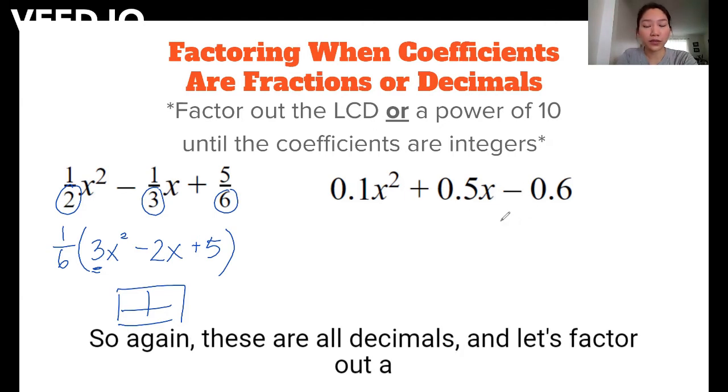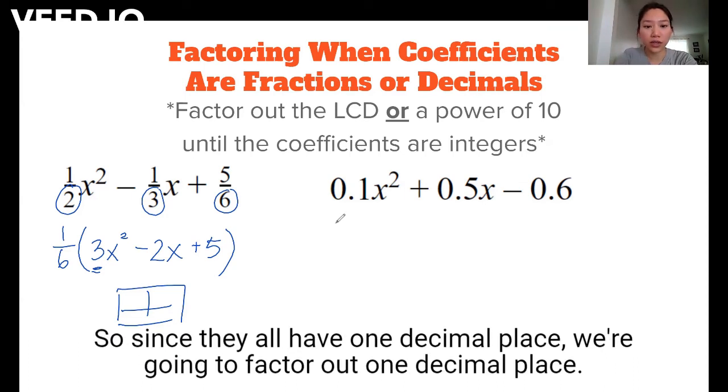Let's factor out a power of 10 until the coefficients are integers. So since they all have one decimal place, we're going to factor out one decimal place.